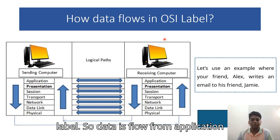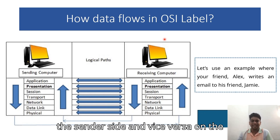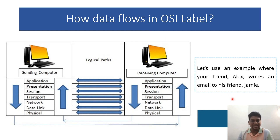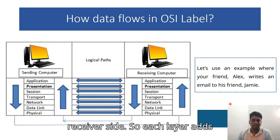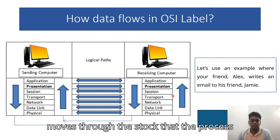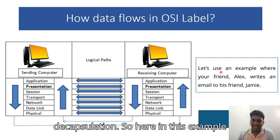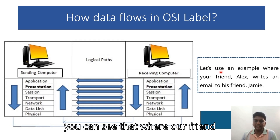Data flows in the OSI model from the Application layer (top) to the Physical layer (bottom) on the sender side, and vice versa on the receiver side. Each layer adds or removes headers as data moves through the stack. This process is called encapsulation and decapsulation.